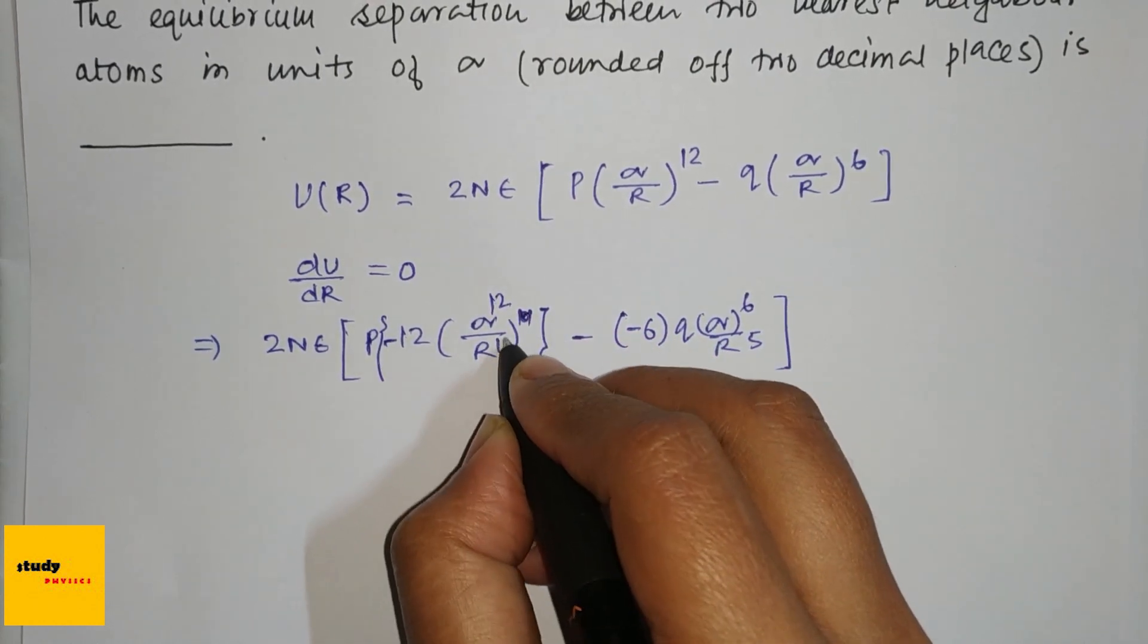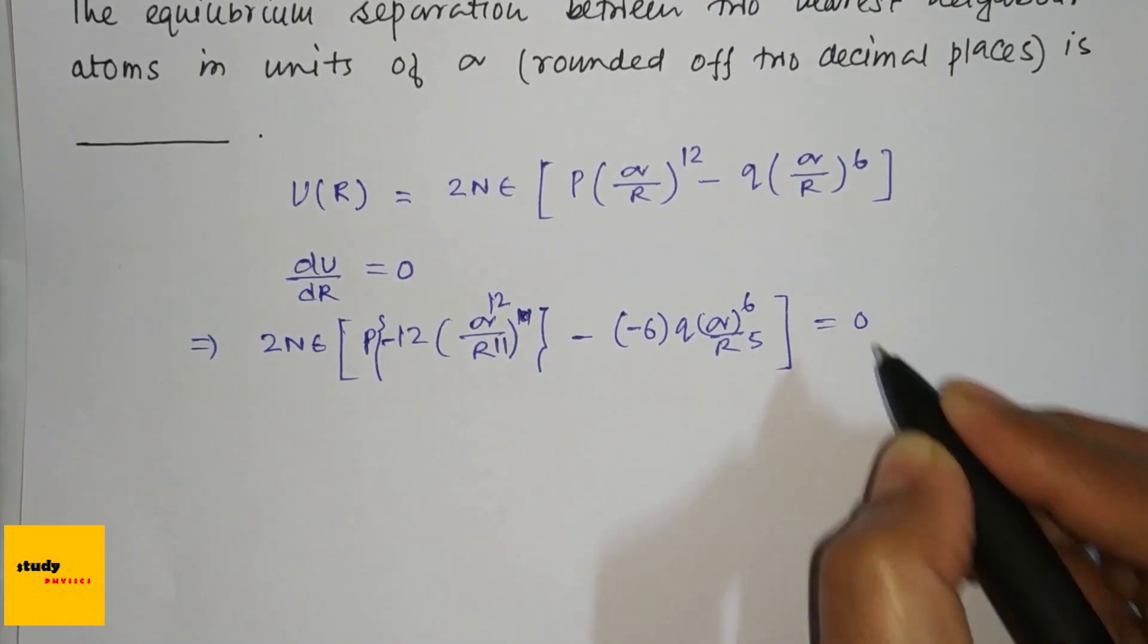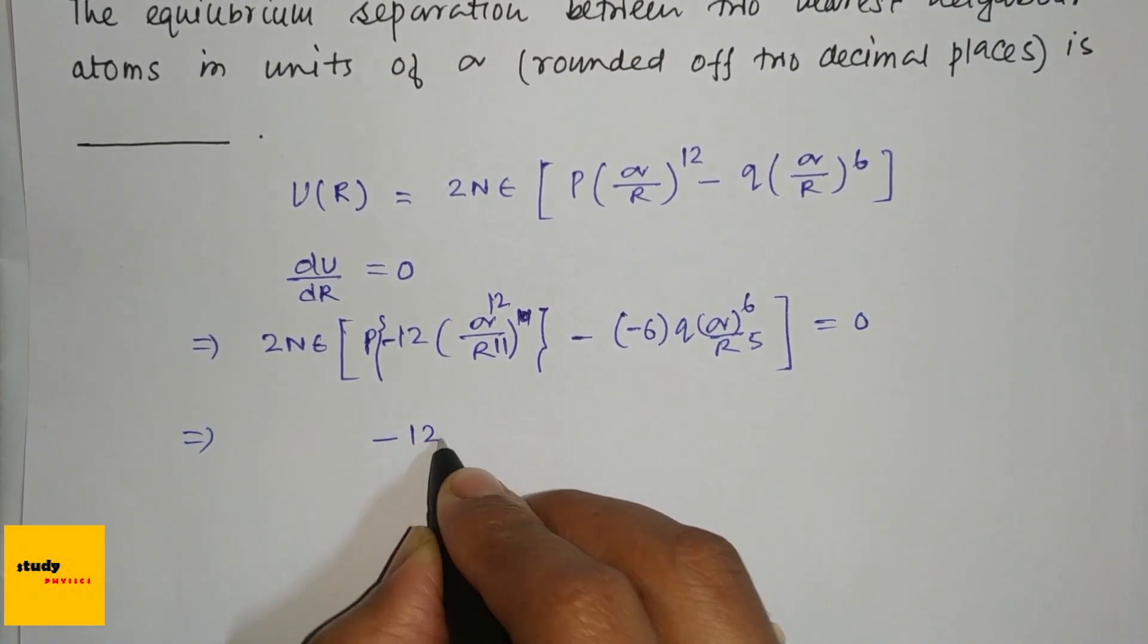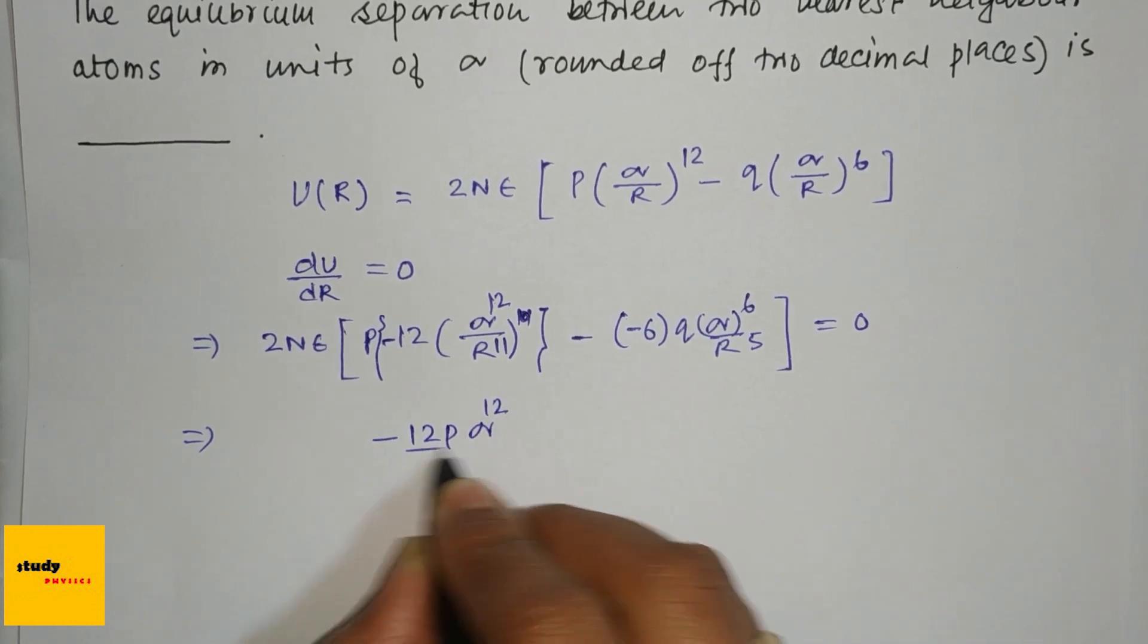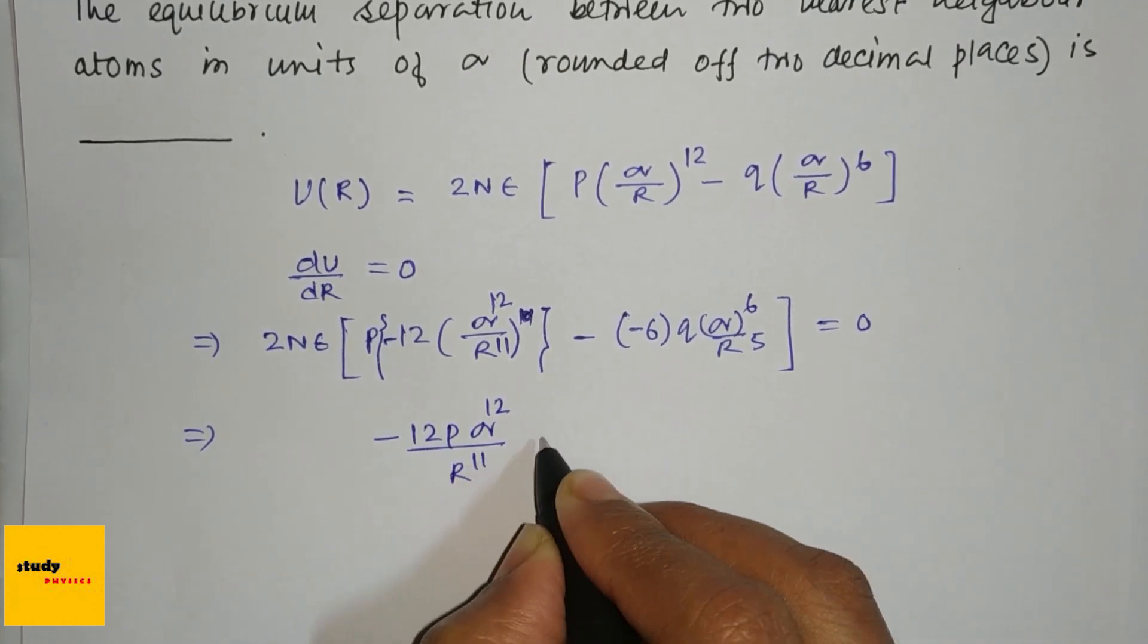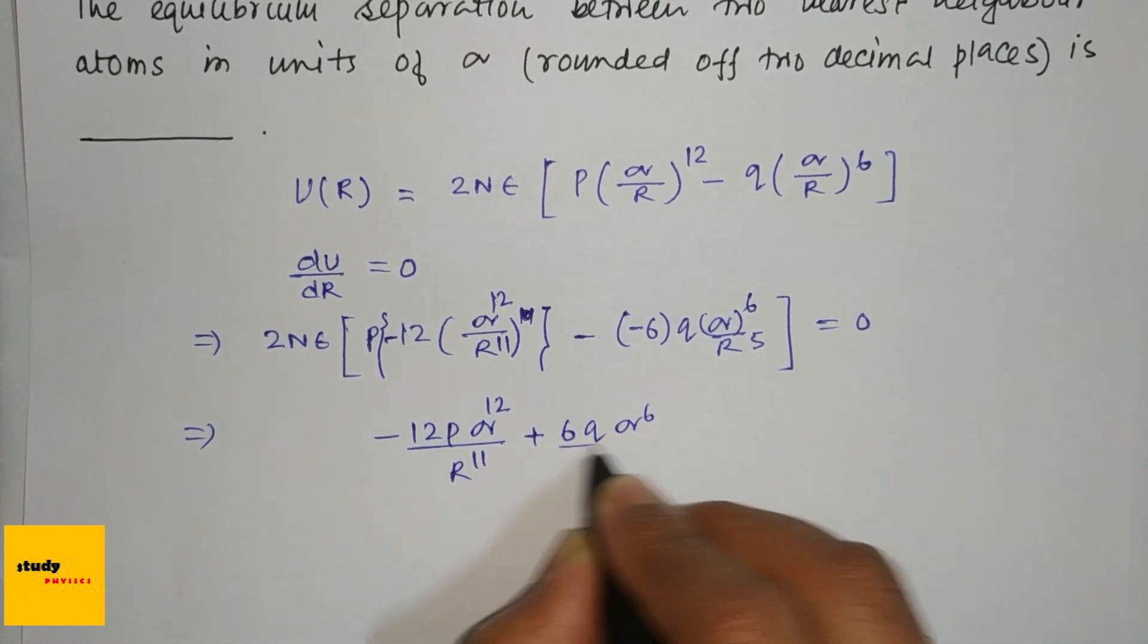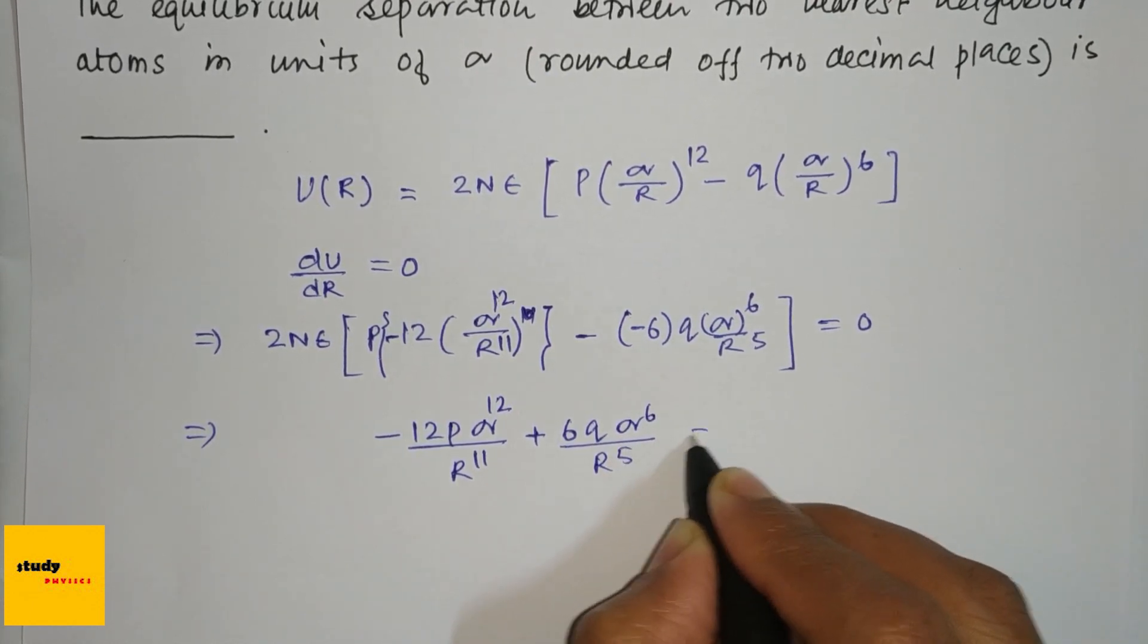Rearranging: 12p(σ^12/R^11) equals 6q(σ^6/R^5).